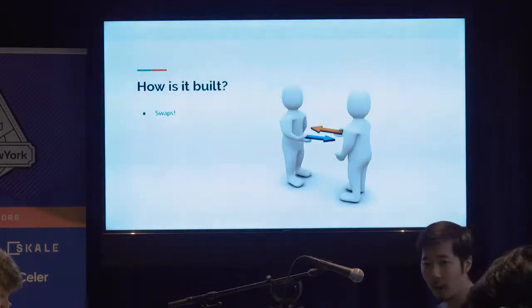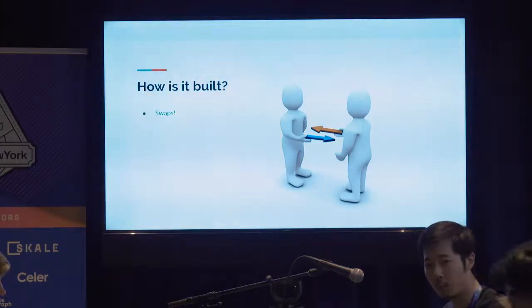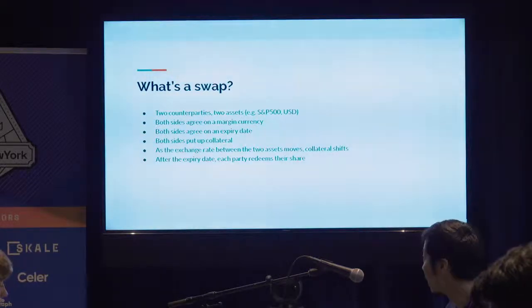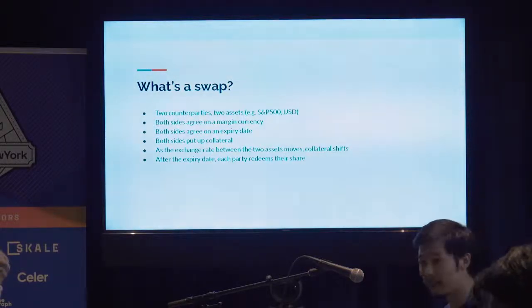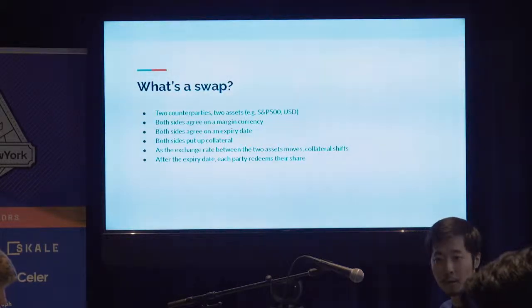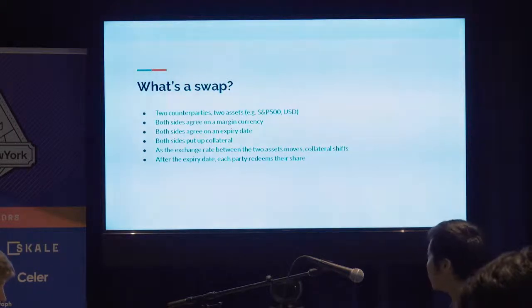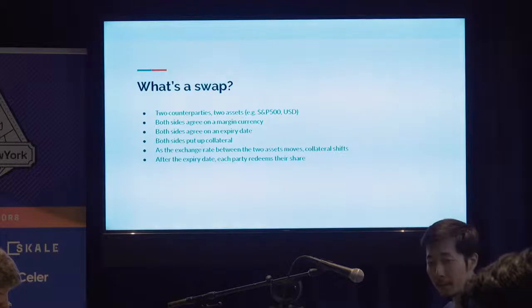How does it actually work? Our synthetic token structure fundamentally uses a swap, which is a kind of derivative. Swaps are used in traditional finance fairly commonly. Generally, they have two counterparties trying to evaluate price movements between two assets. One example: S&P 500 on one side and U.S. dollars on the other. One counterparty bets on the price increase of the S&P 500 relative to the U.S. dollar, and the other counterparty does the opposite. Both parties agree on a margin currency and an expiry date.